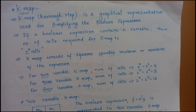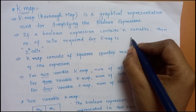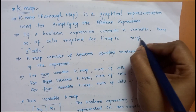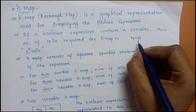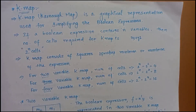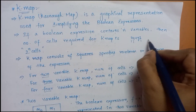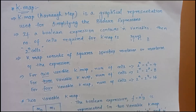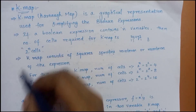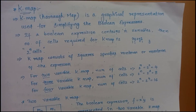If a boolean expression contains n variables, then the number of cells required for K-map is 2^n cells. For example, if you have a boolean expression like xy plus yz with n variables, the K-map consists of squares specifying the minterm or maxterm of the expression.